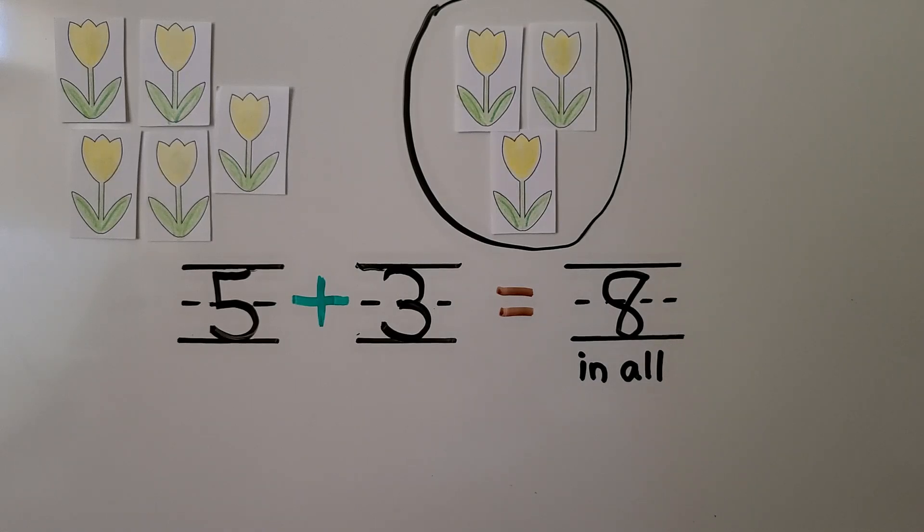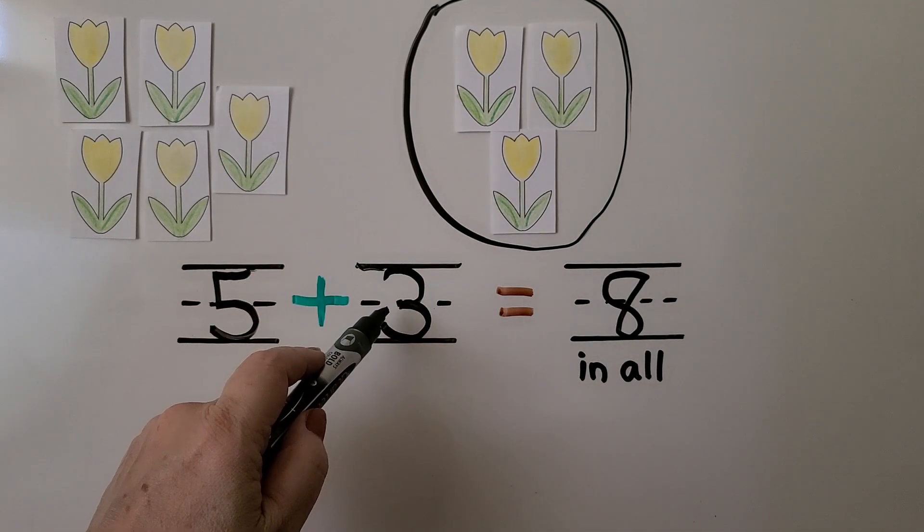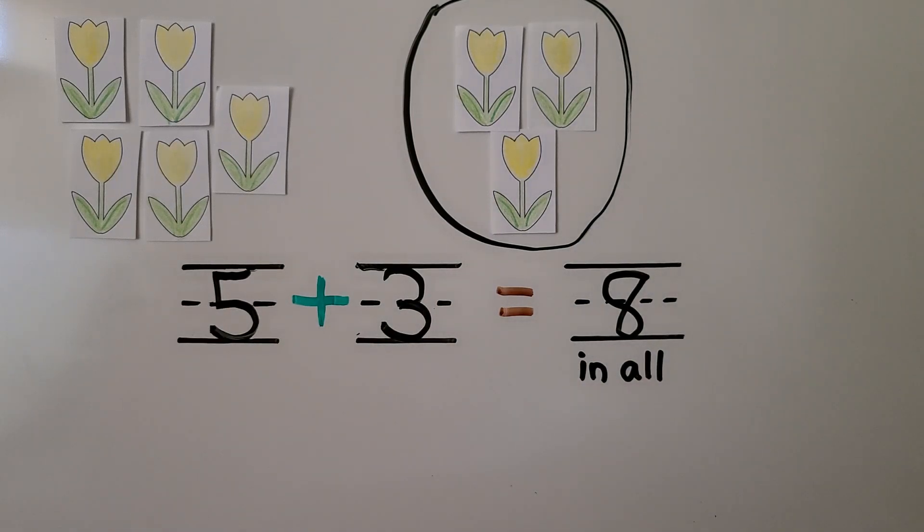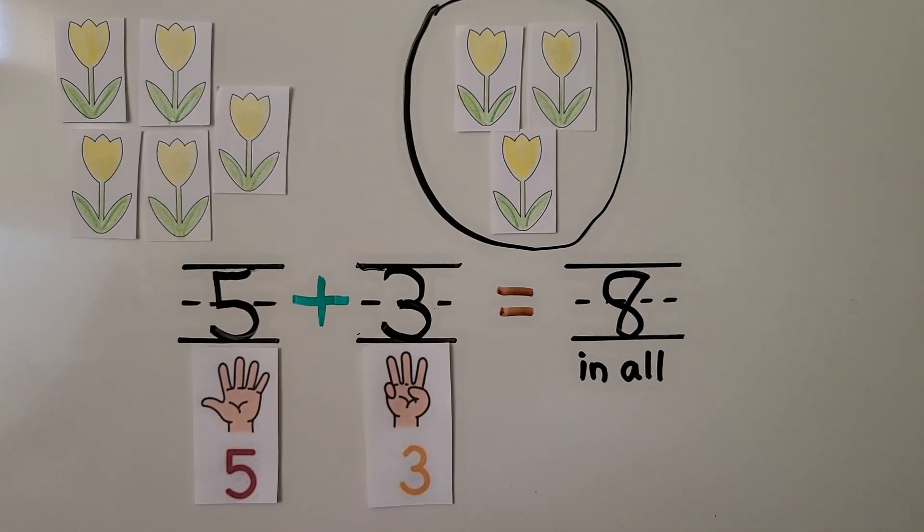So remember the number after the equal sign is the number in all. Three is the number we are adding. Five is the number we had at first. Five plus three is equal to eight.